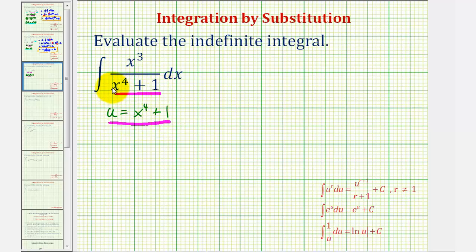And because our goal is to write this integral in terms of u, we now have to find differential u. Where differential u is the derivative of x to the fourth plus one with respect to x times dx.